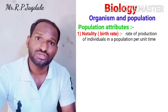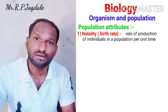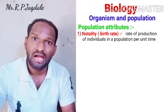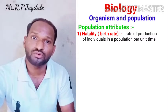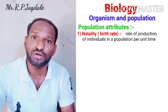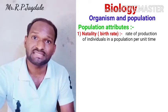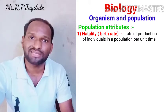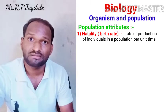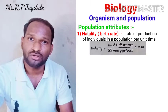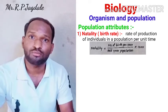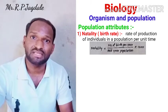That means suppose there is a population of 100 organisms or 100 humans. In that, how many individuals are going to be added by birth — that means new individuals are going to be produced — the rate of this is nothing but natality, or birth rate. The formula is: Natality = (Number of births per year / Mid-year population) × 1000.